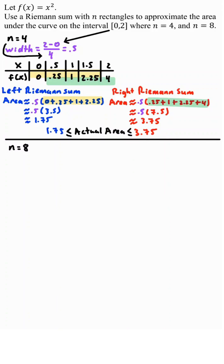If you use 8 rectangles instead, we need to find its width, which will be 2 minus 0 — comes from the interval — divided by 8, which is the 8 rectangles. Simplify this, you get 0.25.